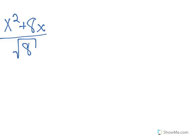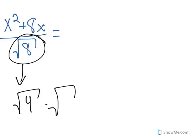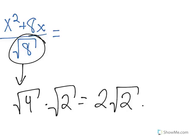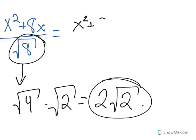Our last example is x squared plus 8x over square root of 8. There are two ways of doing this as well, but we will just use the second method. We know that square root of 8 equals square root of 4 times square root of 2. Since square root of 4 is 2, we get square root of 8 equals 2 times square root of 2. So we can replace square root of 8 with 2 times square root of 2.